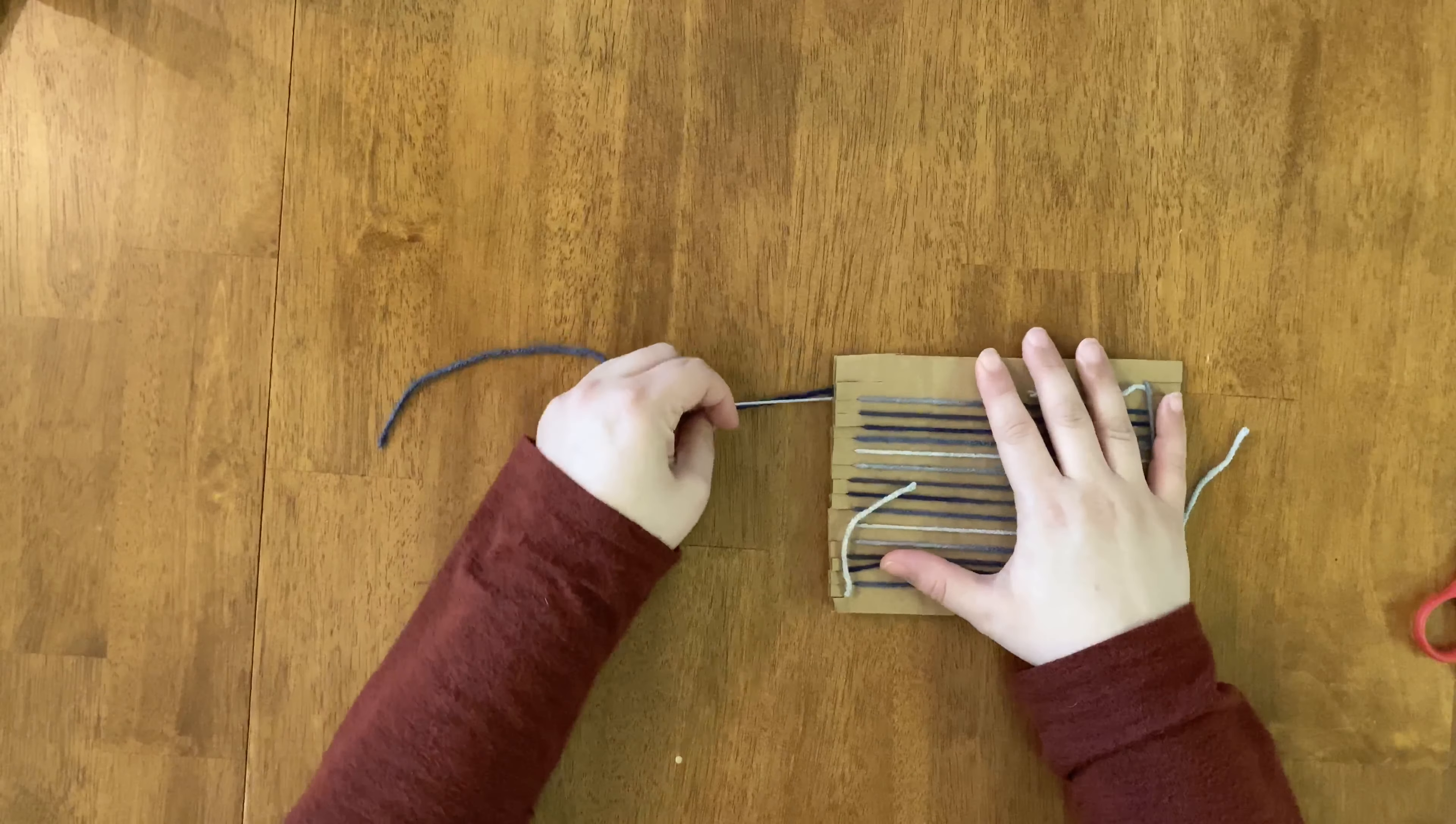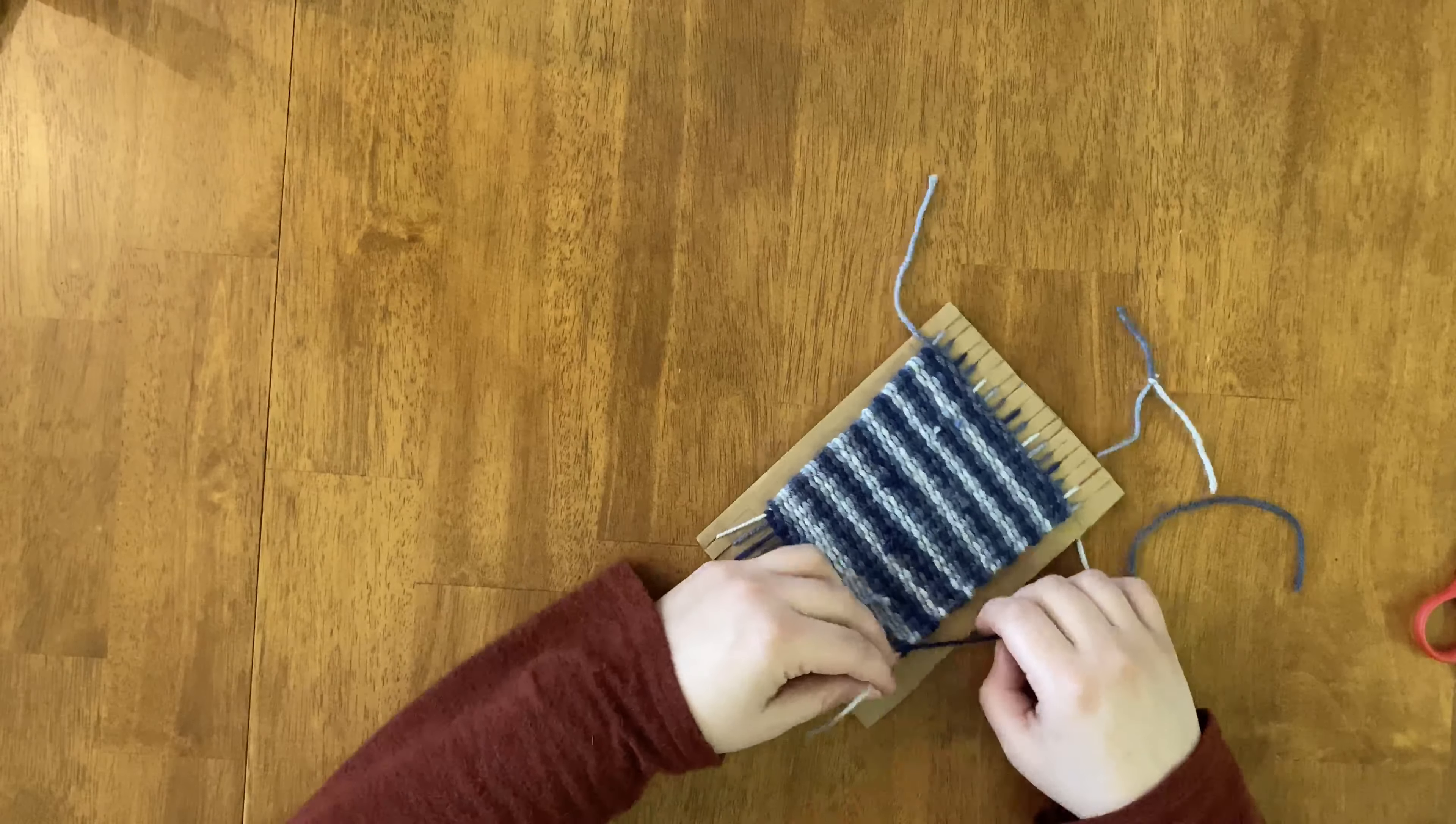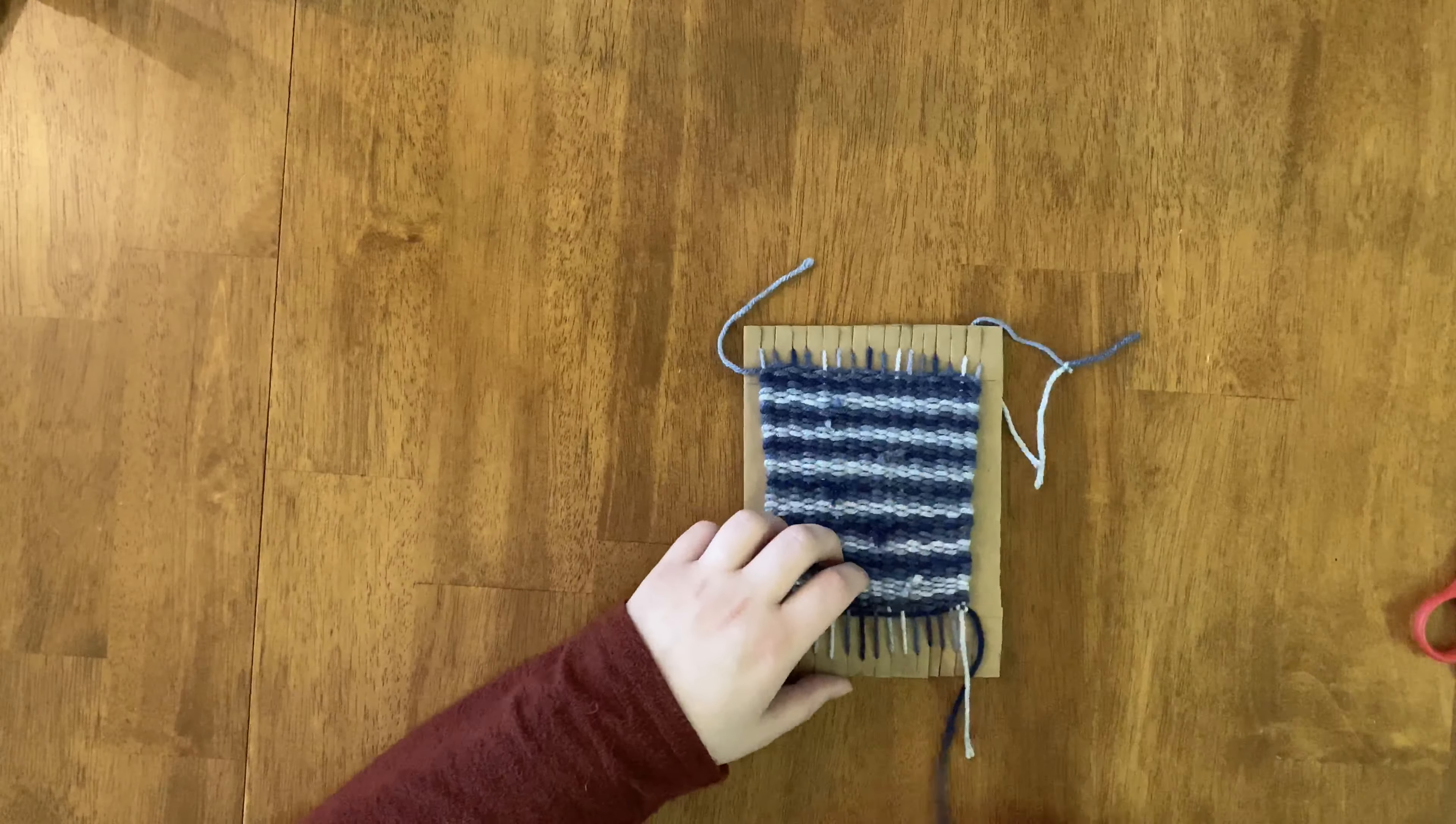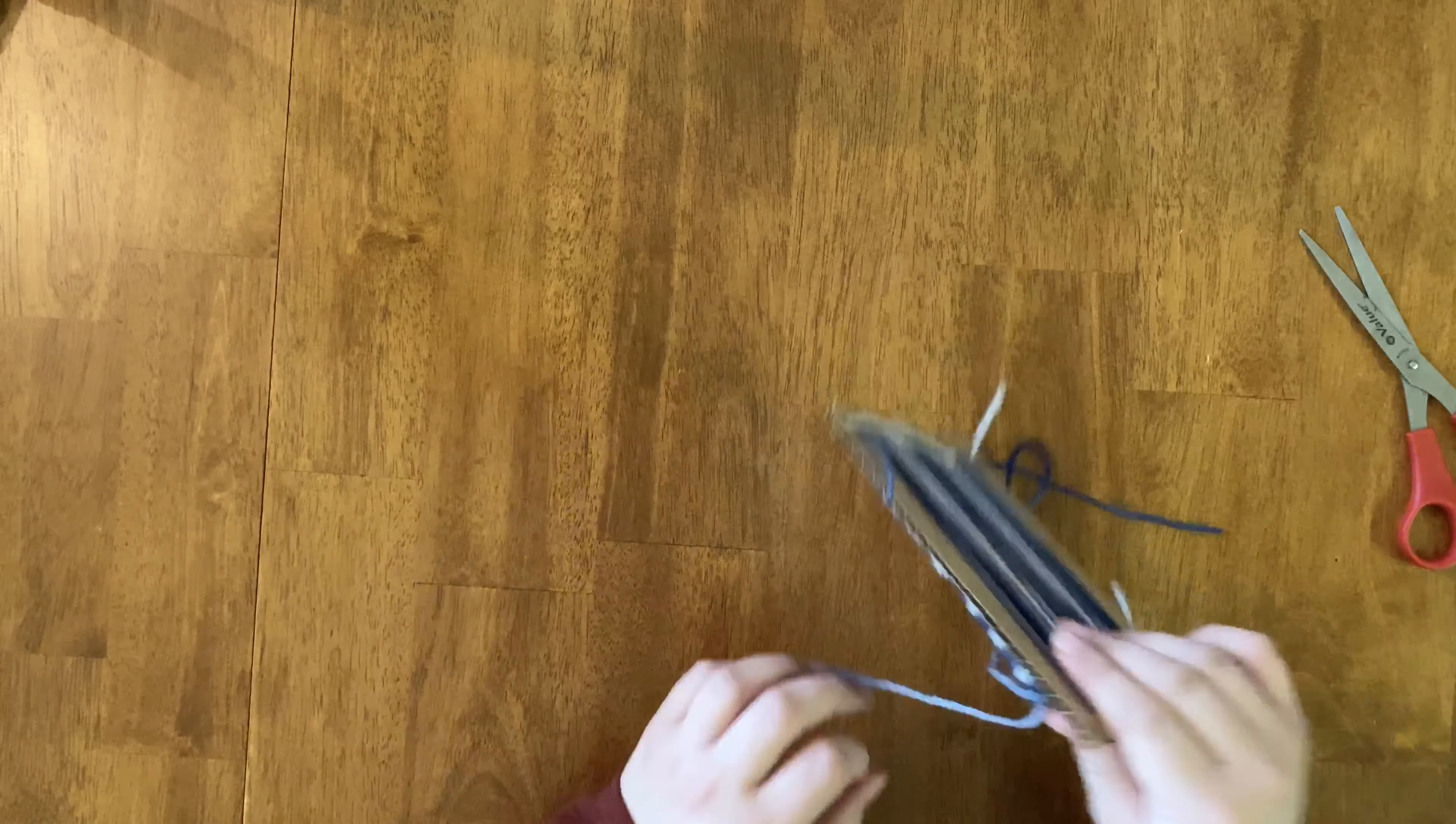Then I tied two knots. The first knot was kind of a looser knot and then the second knot was a tighter knot to secure the first knot. Then I went to the other loose weft string and secured it to the warp in the same way.